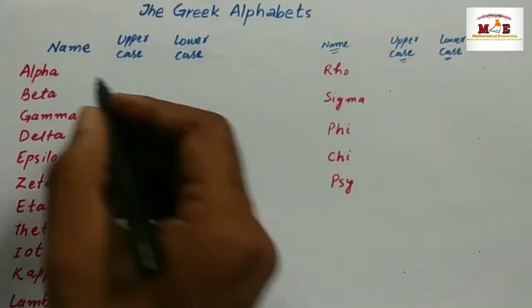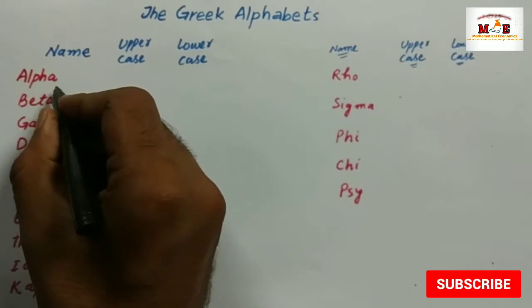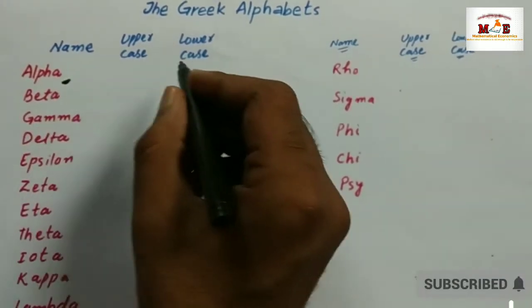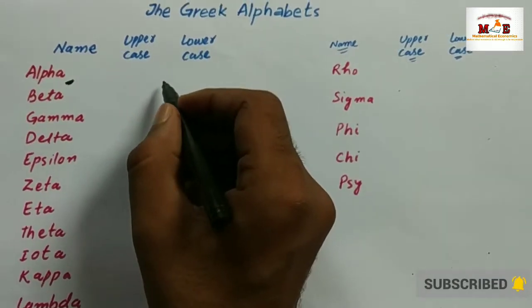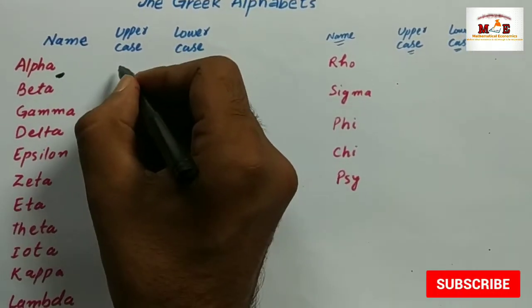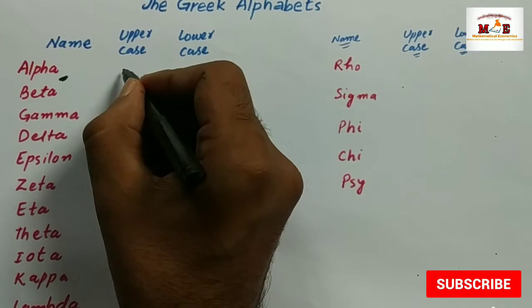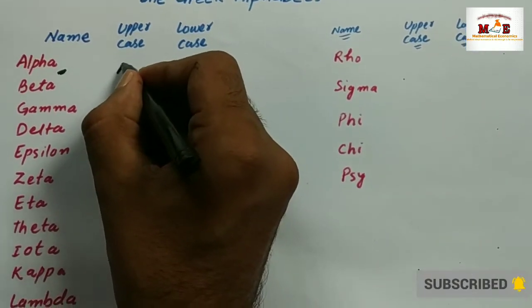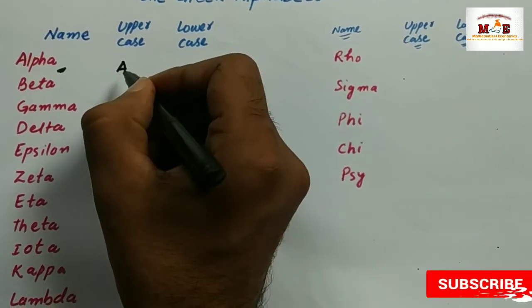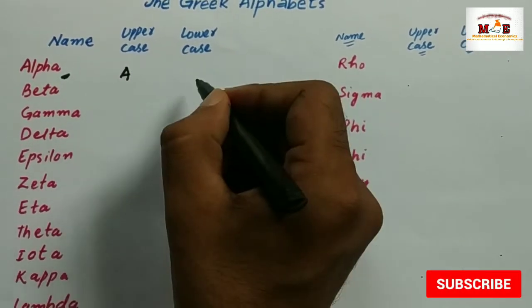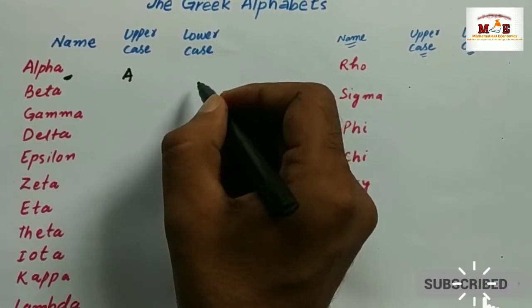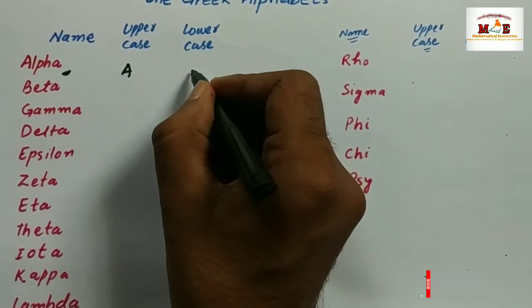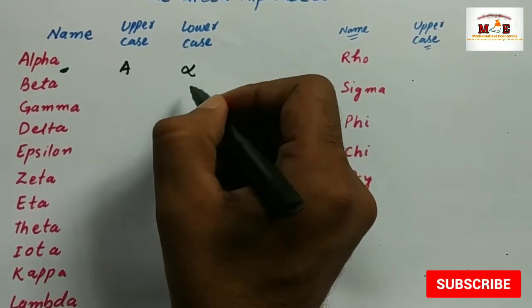The first one is alpha. Its uppercase is written just like the uppercase of English alphabet A, and its lowercase is written like this — alpha.